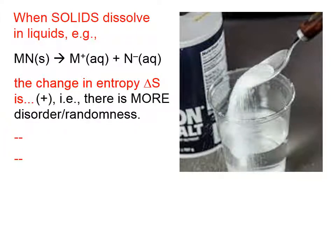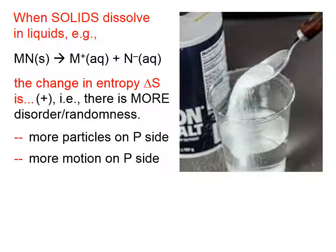There's more disorder, more randomness. For one thing, we have more particles on the product side. We have two particles, M plus and N minus. Those are two separate particles, whereas before, they were a single particle, MN, together. And we have more motion on the product side.